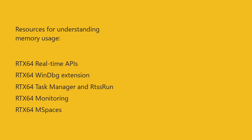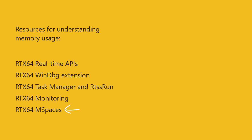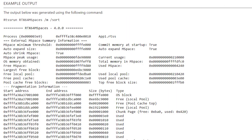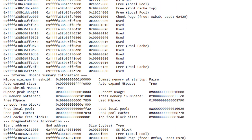RTX 64 4.0 introduces a new command-line tool called RTX64 mspaces, which shows information on all existing mspaces. You can view memory allocations for the subsystem, networking components, and each real-time process.